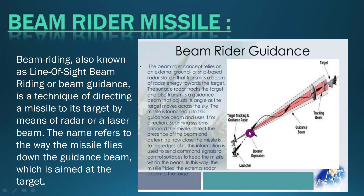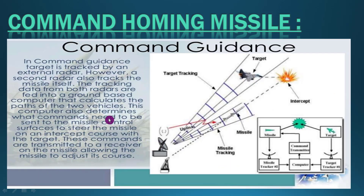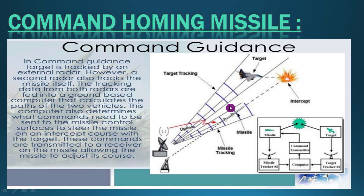In command guidance systems, there may be one or two radar stations. Both the target position and the missile path calculations are done by the radar stations. Missile and target tracking can be done from different radars or even the same radar. If separate radars are used, a command link sends target position data to the missile tracking radar, which then guides the missile. Both radar stations calculate the intersecting point of the target and the missile.